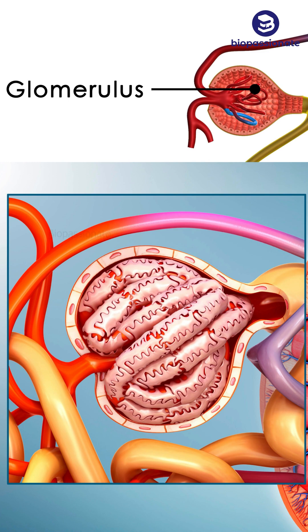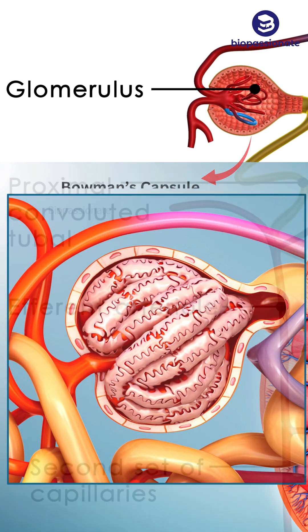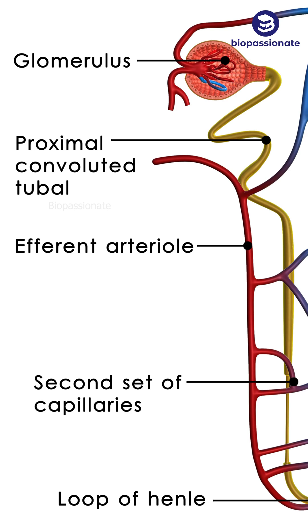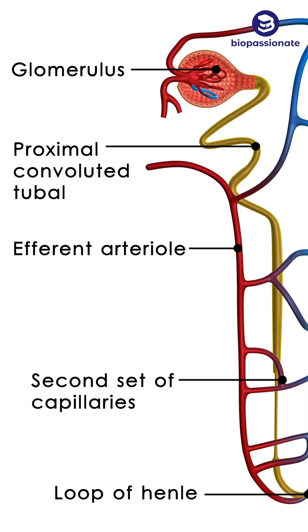The renal tubule begins with a double-walled cup-like structure called Bowman's capsule. The tubule continues further to form a highly coiled network called the proximal convoluted tubule, where selective reabsorption takes place.